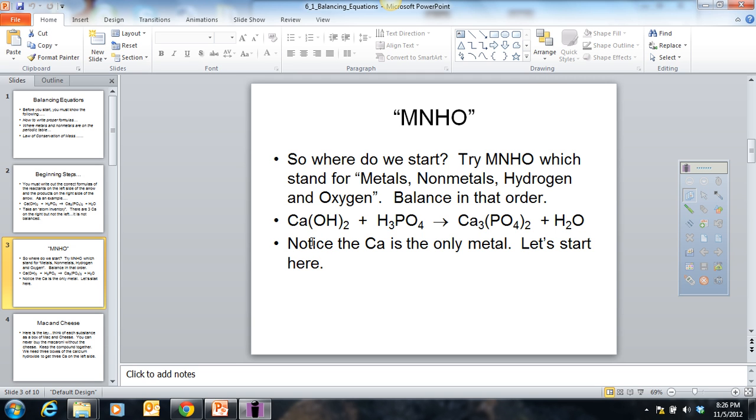So for instance, the only metal element we have here is calcium. So we'll start with the calcium. If you notice, I've got three on this side. I have two on this side. I need two more on this side. So how do I get it?